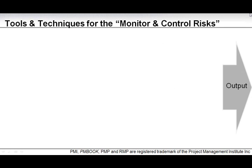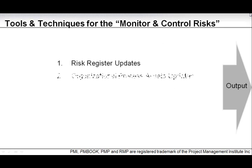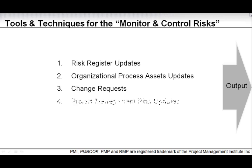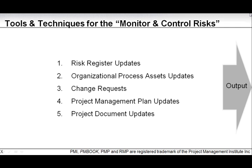Now let's look at the outputs. We have five outputs in total: risk register updates, organizational process assets updates, change requests, project management plan updates, and project document updates.